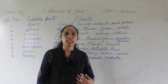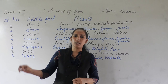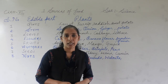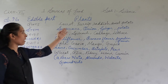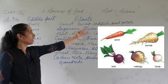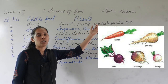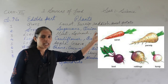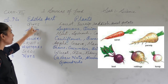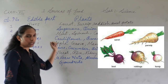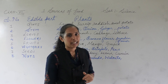There are certain roots that we eat, and those roots are called edible roots. The examples of edible roots are carrot, turnips, radish, and sweet potato. All these are examples of edible roots.